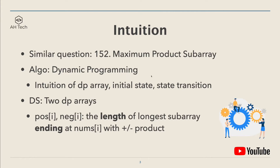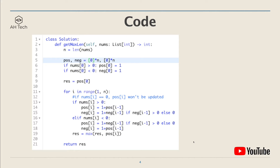The algorithm we will use is dynamic programming. It's quite interesting that you have to use DP to solve medium questions in the contest. To use DP, you first think about the intuition of the DP array, its initial states, and the state transition functions. The data structures we use are two DP arrays: positive and negative.